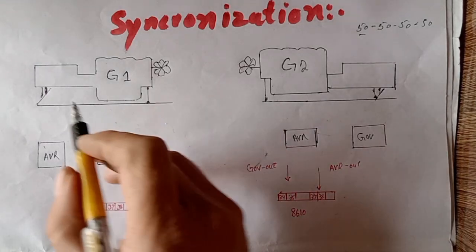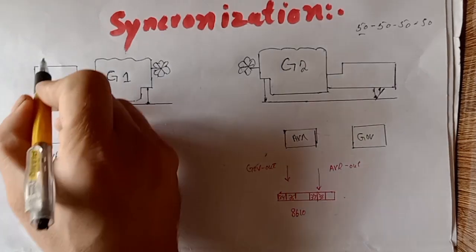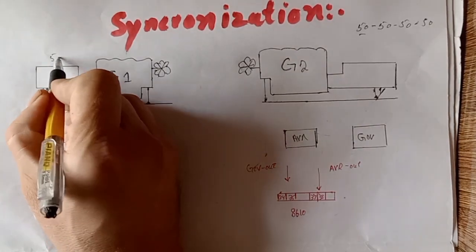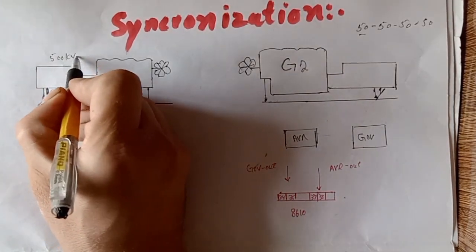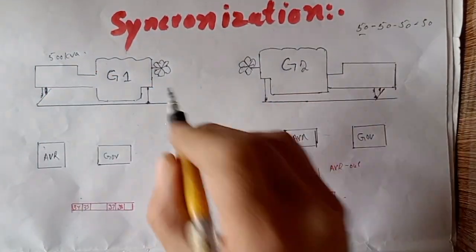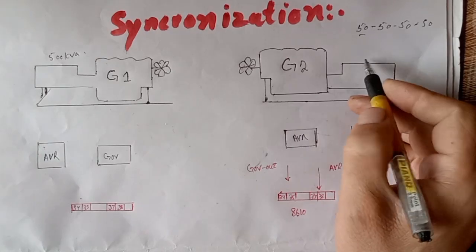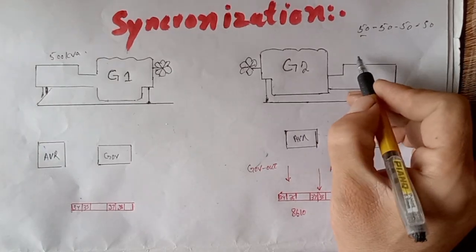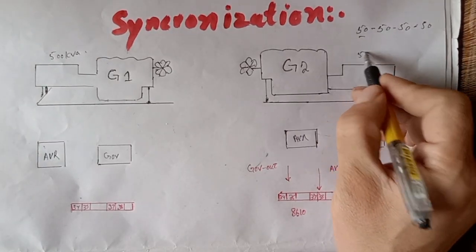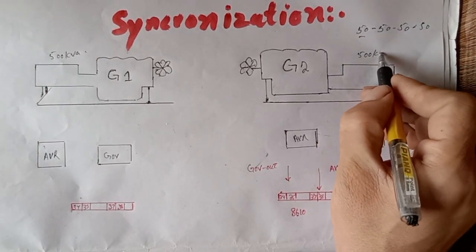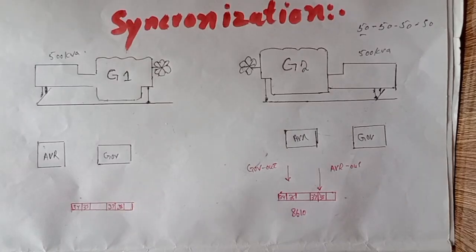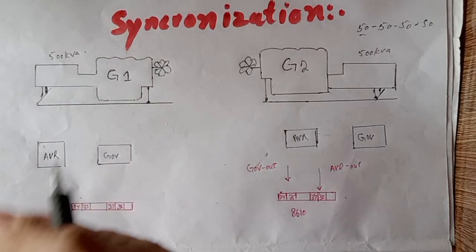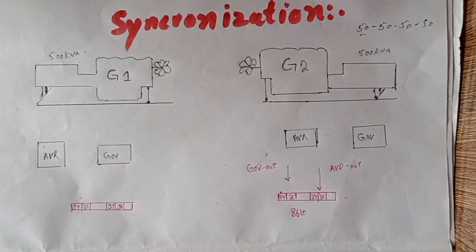For example, if this is our 500 KVA generator, we need to take another generator which also has a 500 KVA rating to synchronize them and use the parallel load of both generators.